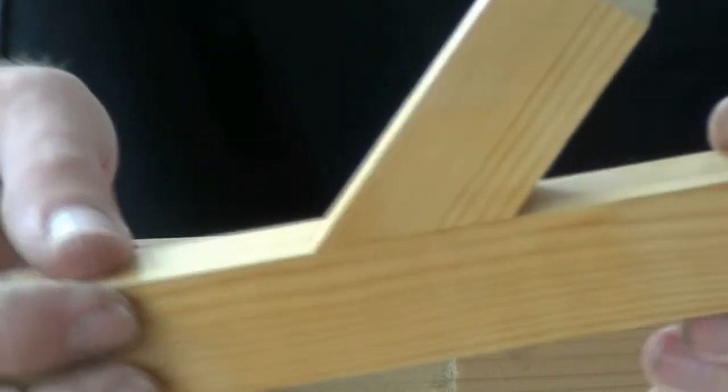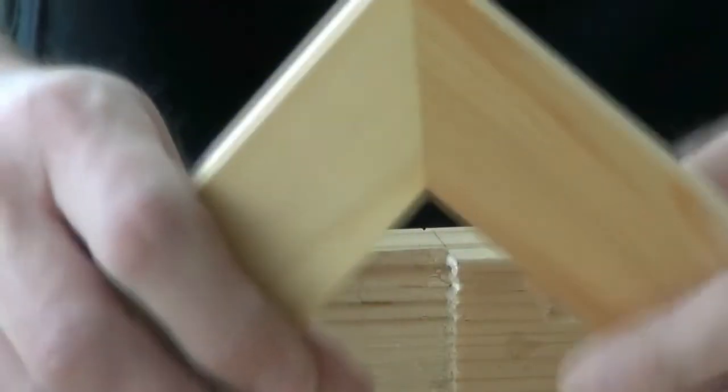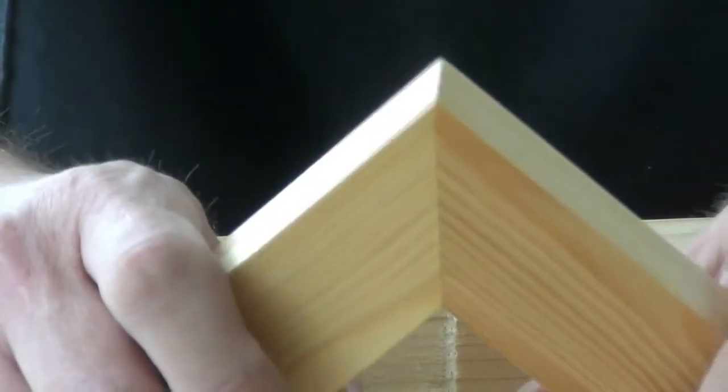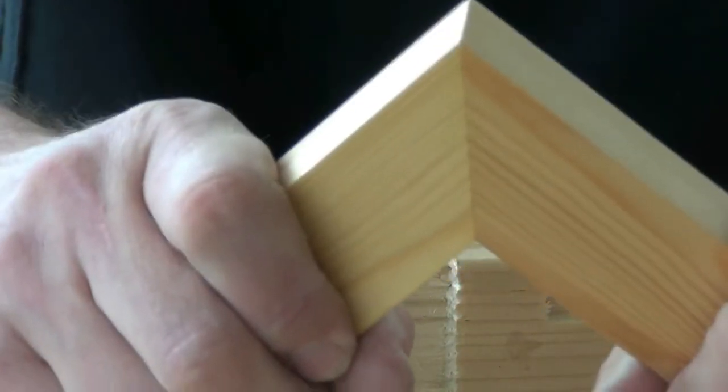You can have mortise and tenons on an angle. And here's a mitre joint that has a mortise and tenon inside it. And that makes it very strong.